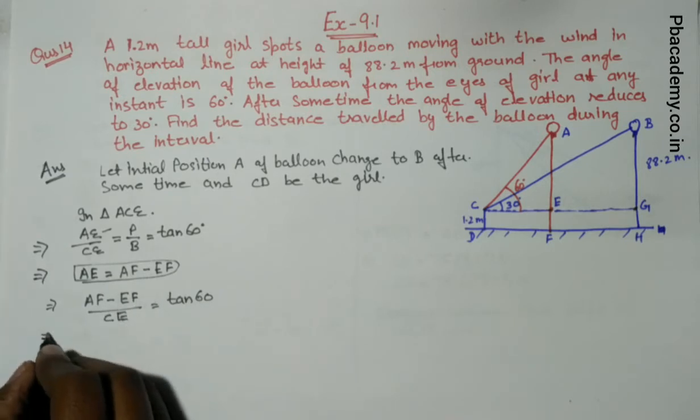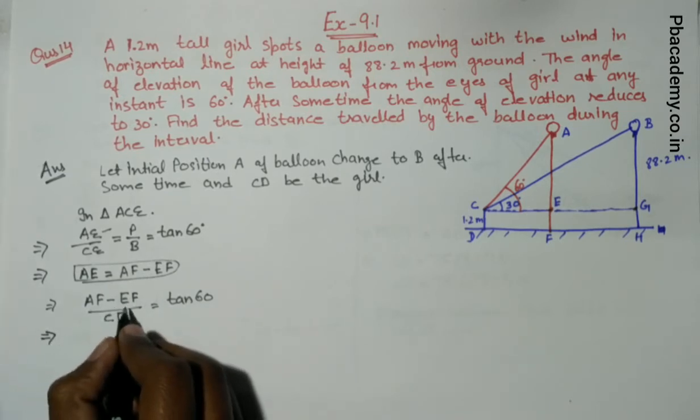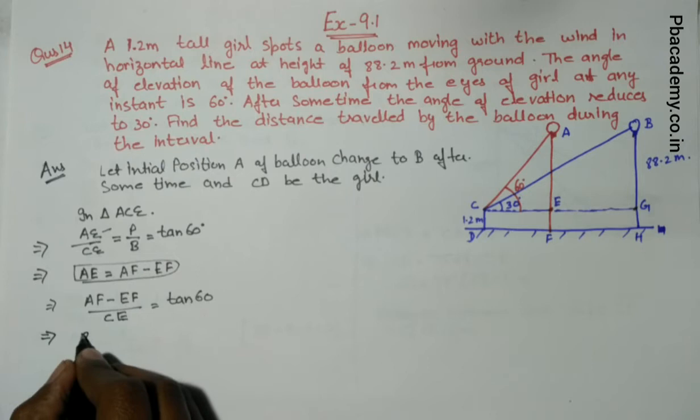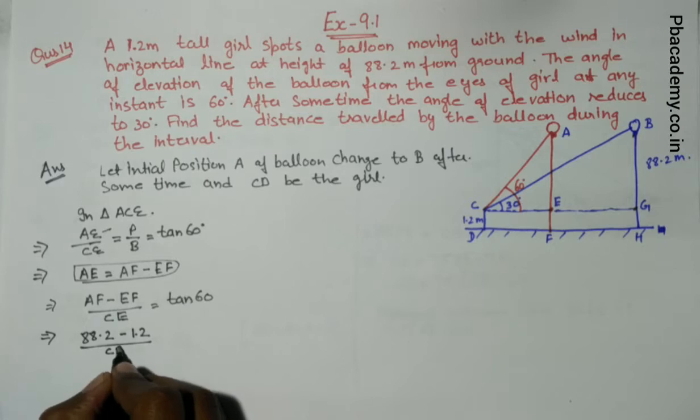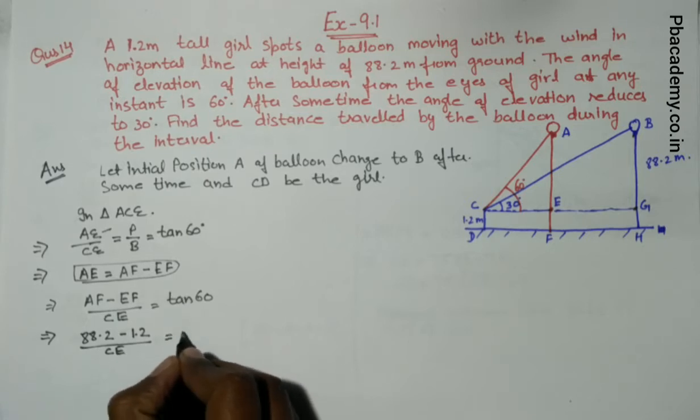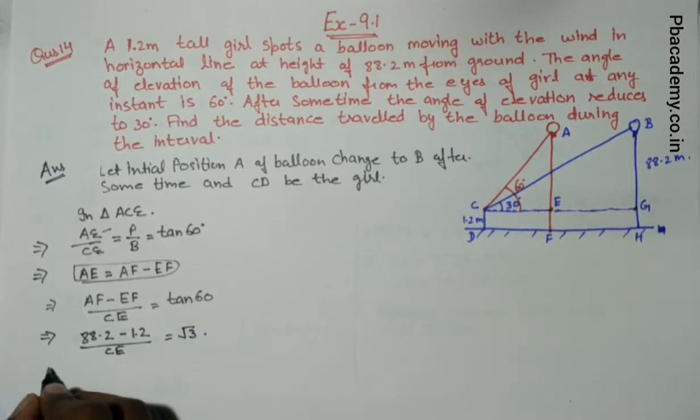This equals root 3. AF minus EF - the value of EF is 1.2, given. When we solve this it becomes 87 upon CE equals root 3. Cross multiply, the value of CE is 87 upon root 3.